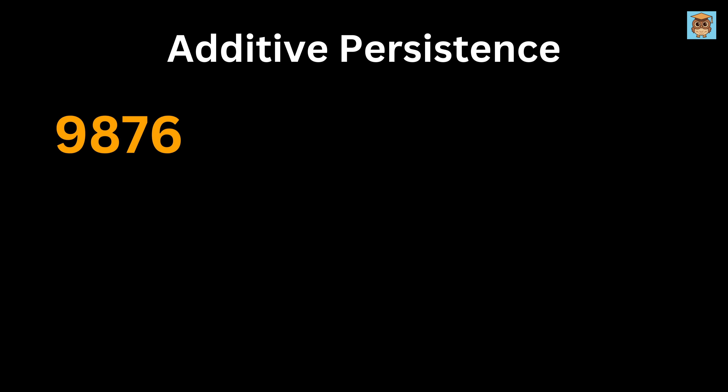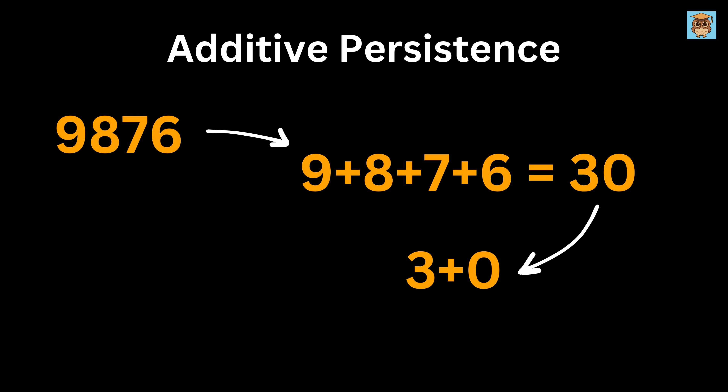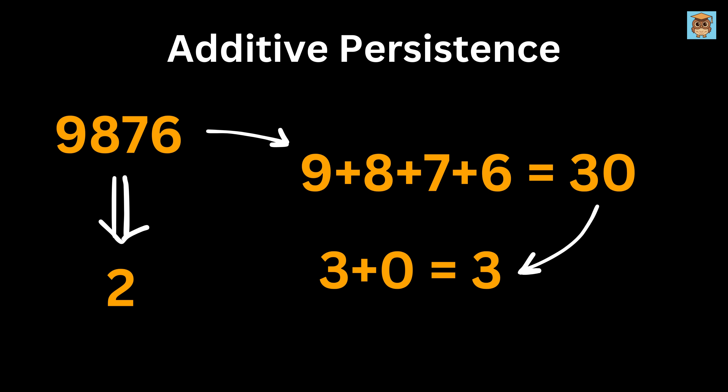Additive persistence is a neat number trick. For example, take the number 9,876. If you add its digits — 9 plus 8 plus 7 plus 6 — you get 30. Then add the digits of 30, or 3 plus 0, and you get 3. So the additive persistence of this number is 2. That counts how many times you need to add the digits of a number together until you end up with a single digit.